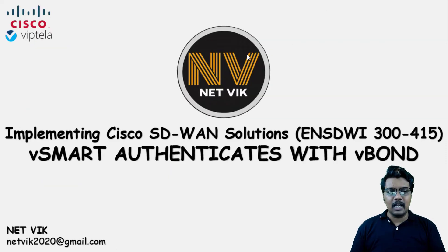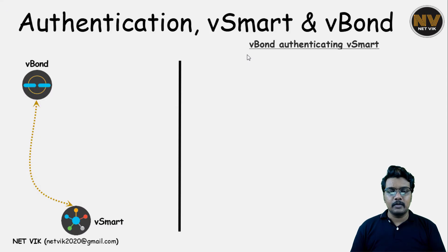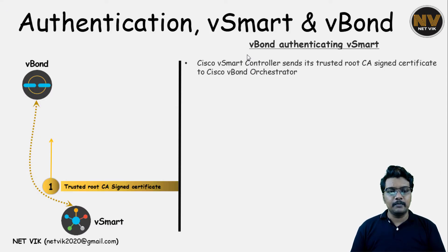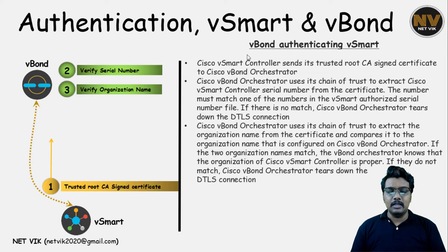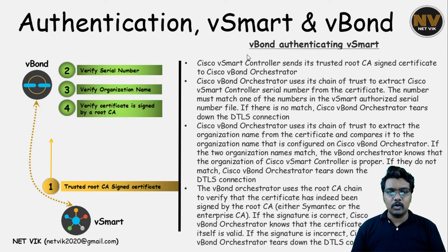Let's start with vBond authenticating vSmart. The trusted signed certificate is sent by vSmart to the vBond. vBond verifies the serial number, the organization name, and then checks the signed certificate as well. vBond will get the serial number of the vSmart from the vManage.